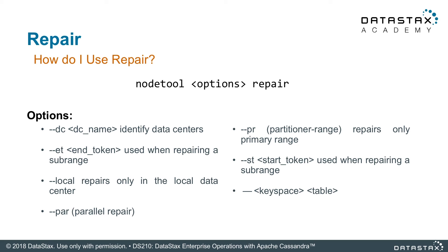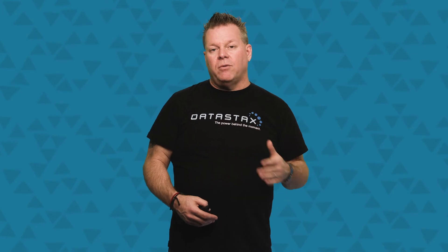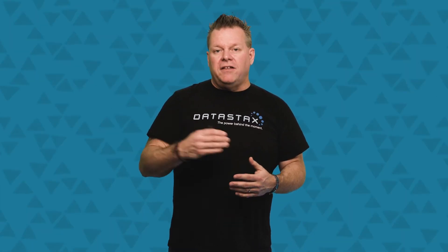How do you actually run a repair? The nodetool repair command is the first stop. There are many options: 'pr' for partitioner range, start and end tokens for range repair, and you can even target a specific keyspace and table. Know how to use repair for your use case. If you're using OpsCenter, the repair service is really helpful — it takes away a lot of the pain and makes repair a continuous background operation. This has been all about repair; there's a lot to learn, but this is a good start.